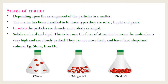Next is states of matter — you have already studied this in the previous class. Matter is identified in three forms: solid, liquid, and gas. In solids, particles are densely and orderly arranged. What do we mean by densely? Thickly packed. Examples: stone, iron, etc.